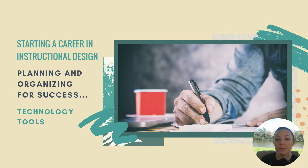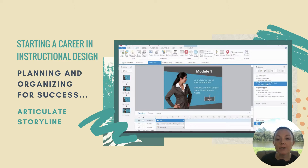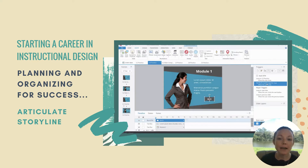You'll also need a computer that can handle the software and development tasks I'm about to discuss. First is Articulate Storyline. Articulate Storyline 360 is the most popular rapid e-learning authoring tool on the market. It isn't perfect by a long shot, but you can develop highly custom interactive e-learning in a fraction of the time that it would take you with any other rapid authoring tools such as Adobe Captivate.